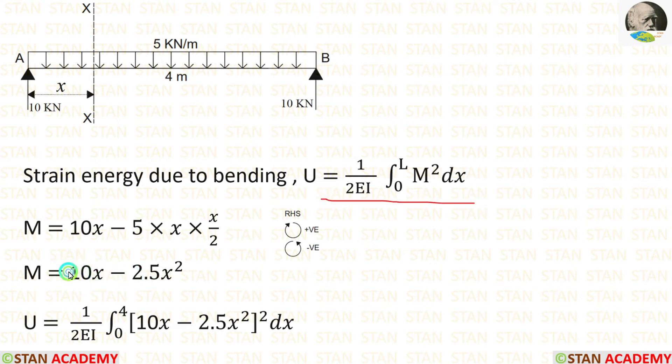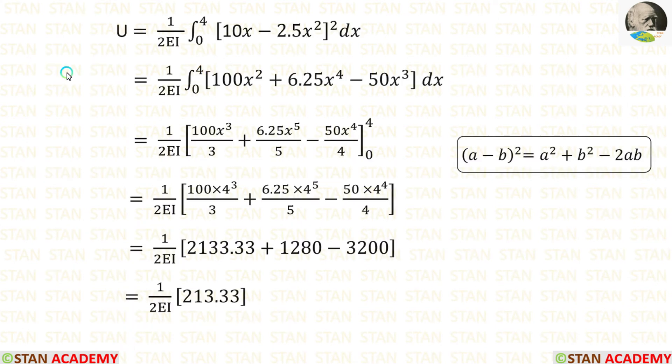In the strain energy formula, we can apply the value of M. Also, we can apply the limits, 0 to L. In this beam, the length is 4 meter, so 0 to 4. Now, we can make the integration. We can make the integration either manually or in the calculator. If you do the integration in the calculator, we will get the answer directly. If you do not know how to use calculator for integration, see the description below. There is a link. You can click the link and watch the video for getting ideas how to make the integration in the calculator.